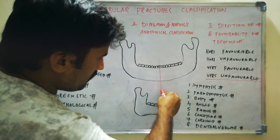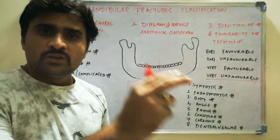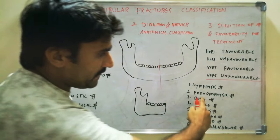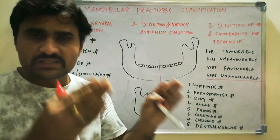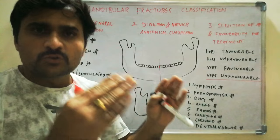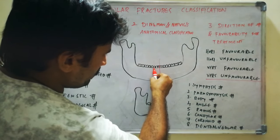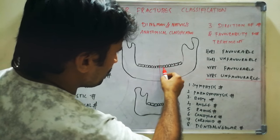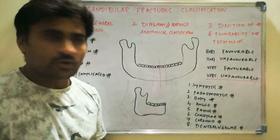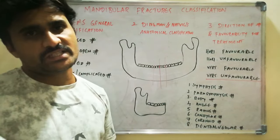As seen in the diagram, the symphysis region is where fractures run through the two central incisors. Parasymphysis is the region bounded between two vertical lines drawn distal to the canine. In the diagram, the line passes at the distal aspect of the canine, and fractures between these two vertical lines are called parasymphysis fractures.